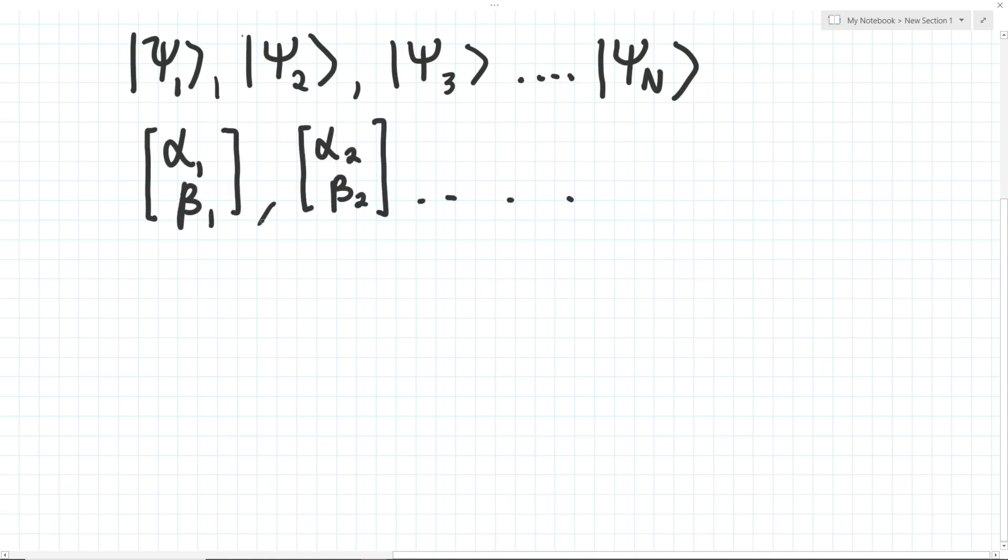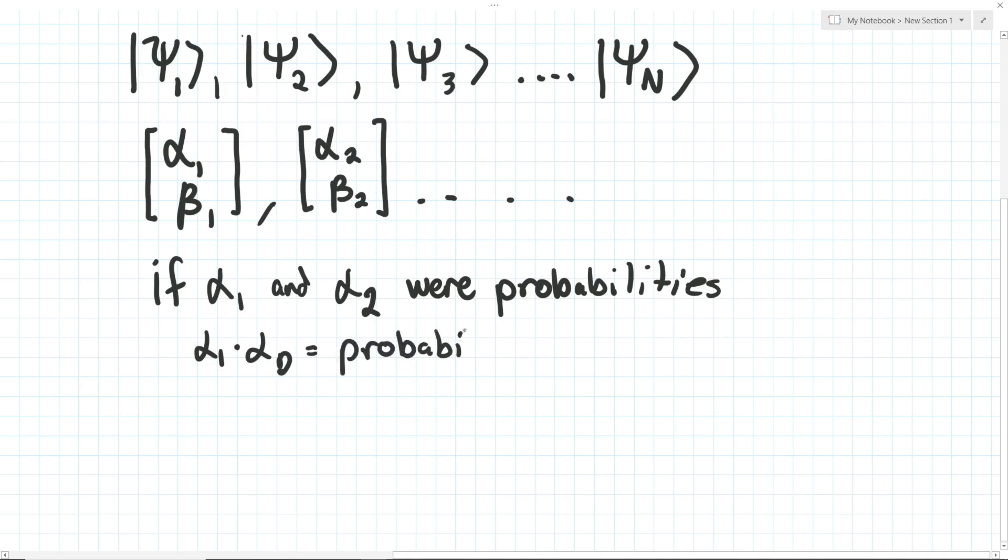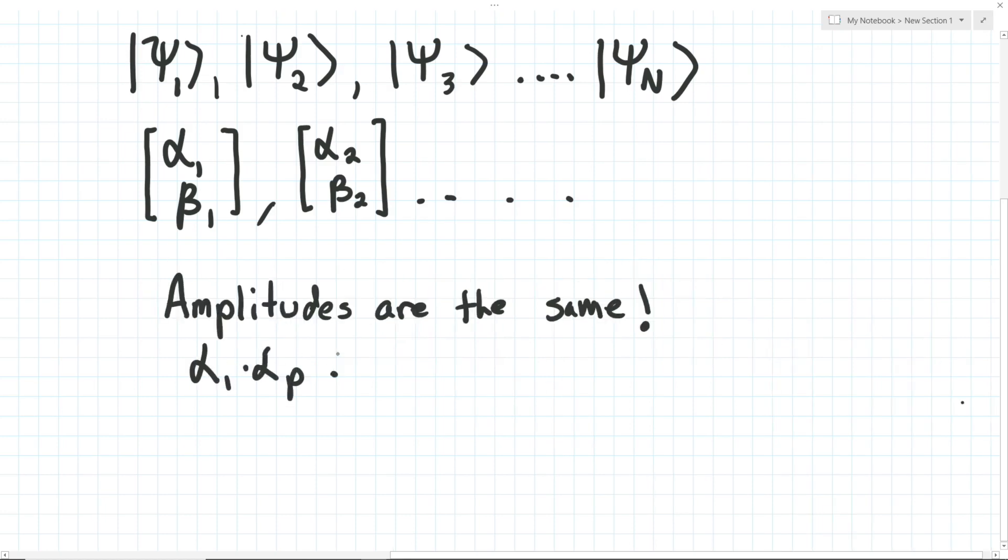What if we are measuring two or more qubits, though? Representing each of them through these vectors will quickly become unwieldy. If we have probabilities instead of amplitudes, we could just multiply them and get the probability, for example, of measuring 0 twice. Fortunately, we can still do this. Amplitudes are similar to probabilities in this way.